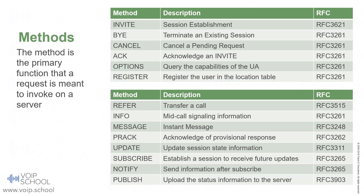Methods. A method is the primary function that a request is meant to invoke in a server. RFC 3261 defines six methods. In this training, we will concentrate on the methods defined by this RFC. There are other methods defined in their corresponding RFCs.